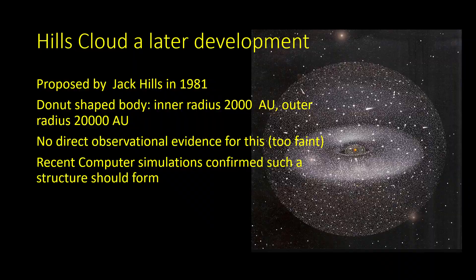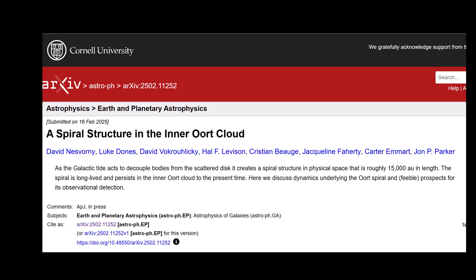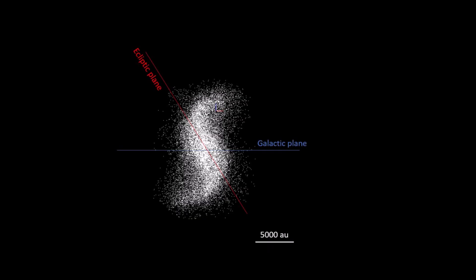Interestingly, a recent paper suggested that the structure wasn't donut-shaped but could in fact be spiral-shaped. But again, it's a theory which is very difficult to prove or disprove because we can't observe it directly.